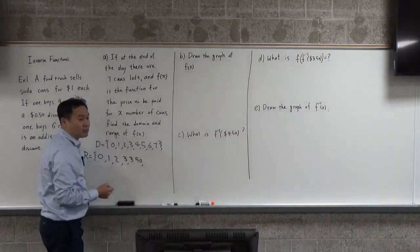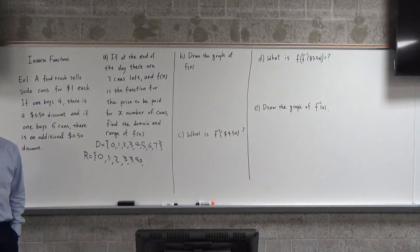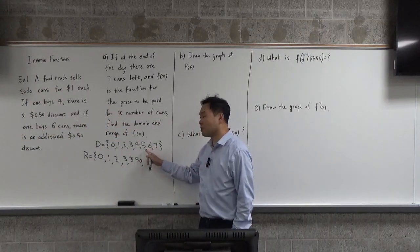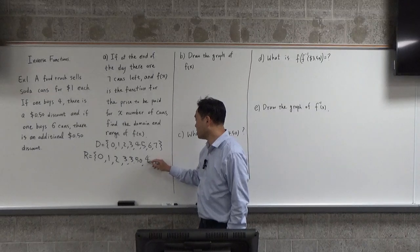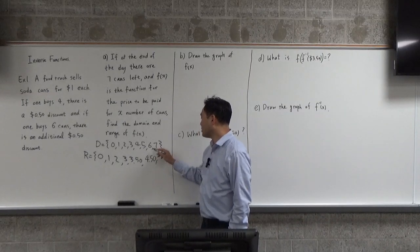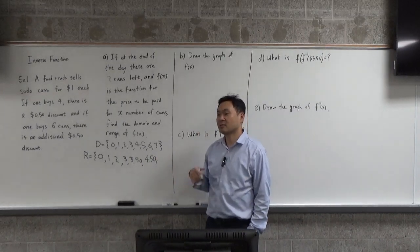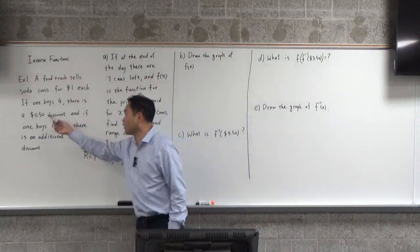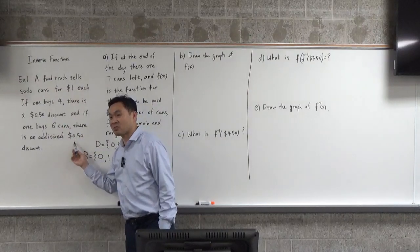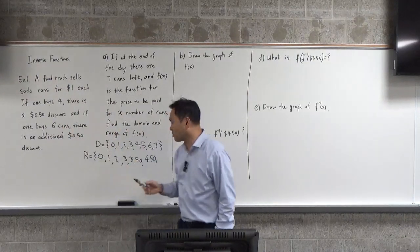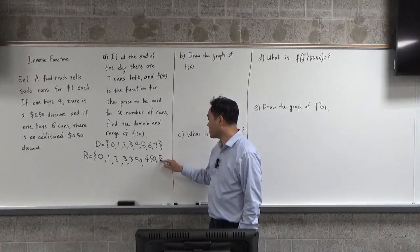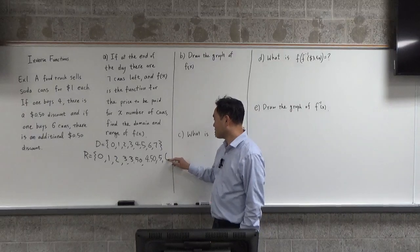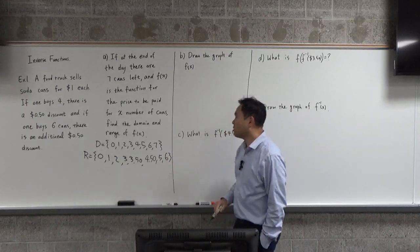What about 5? $4.50, because you pay $3.50 for 4 cans plus one more. How about 6? Well, 6 cans should be $6, but there's 50 cents and another additional 50 cents discount, so $1 discount total. It's 6 minus 1, which is $5. And 7 is $6. So that will be your range.